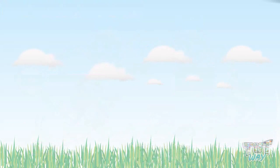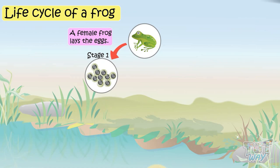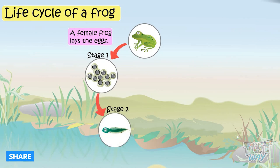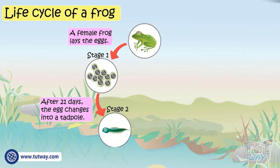Now we will learn the life cycle of a frog. First of all, a female frog lays eggs. In stage 2, after about 20 or 21 days, the eggs change into tadpoles that more or less look like a small fish.